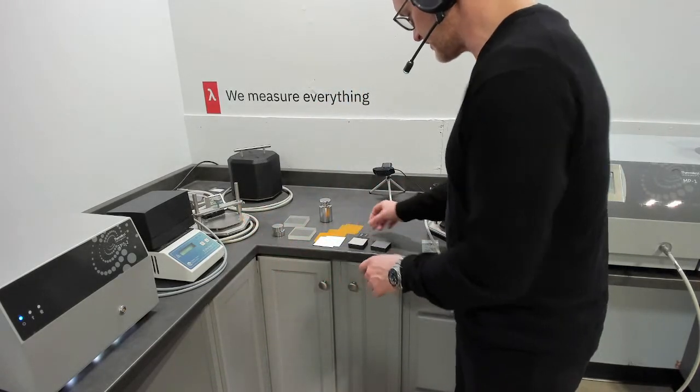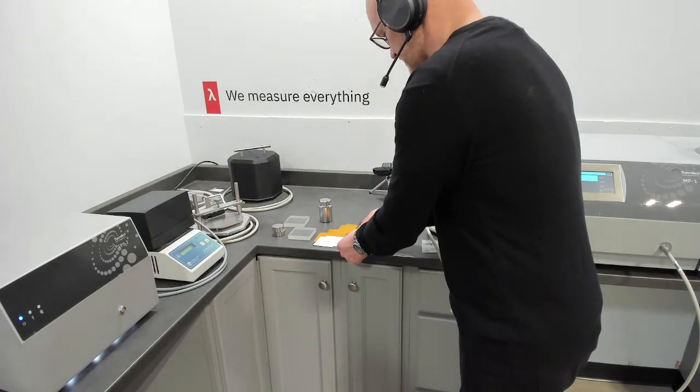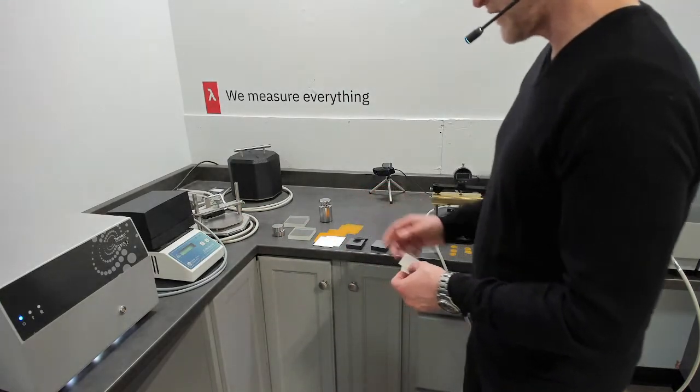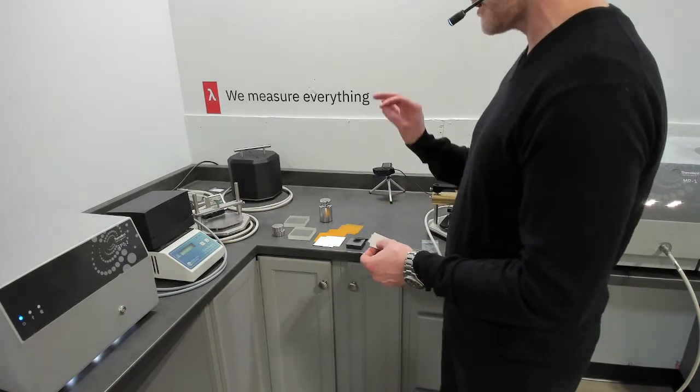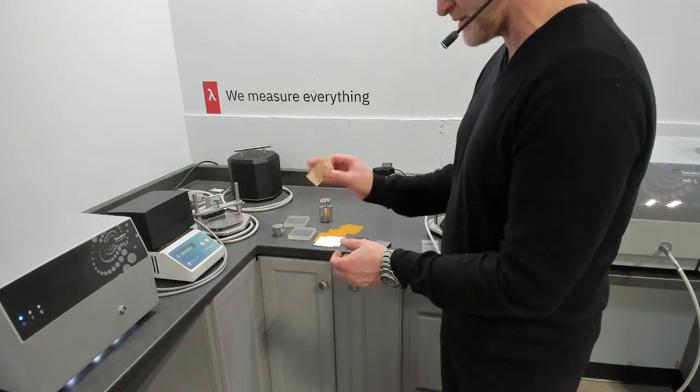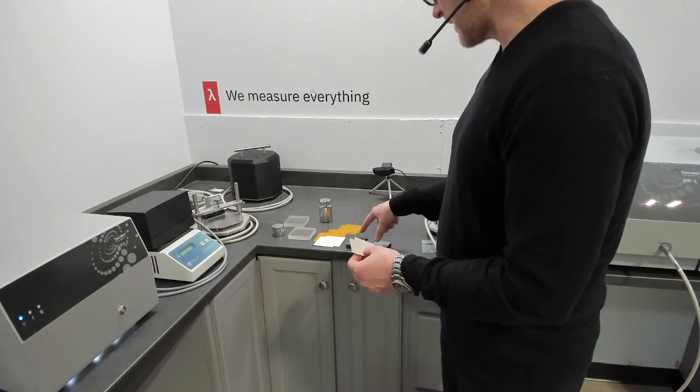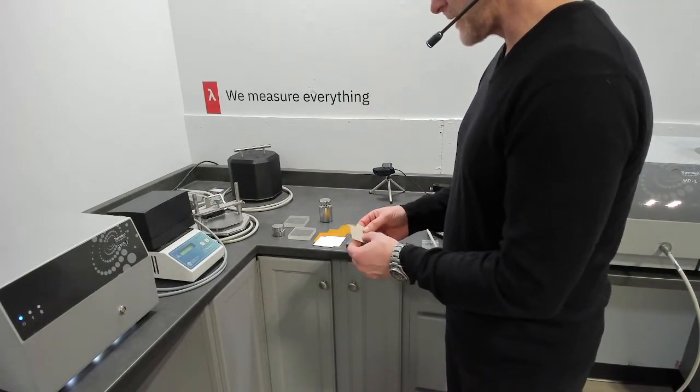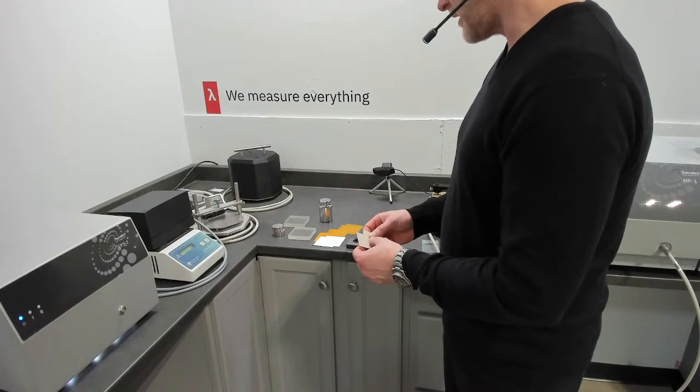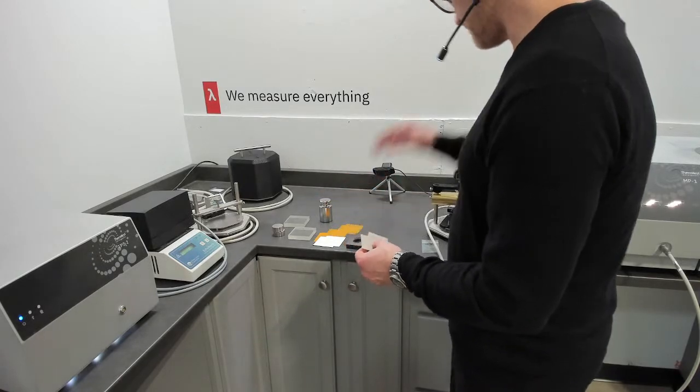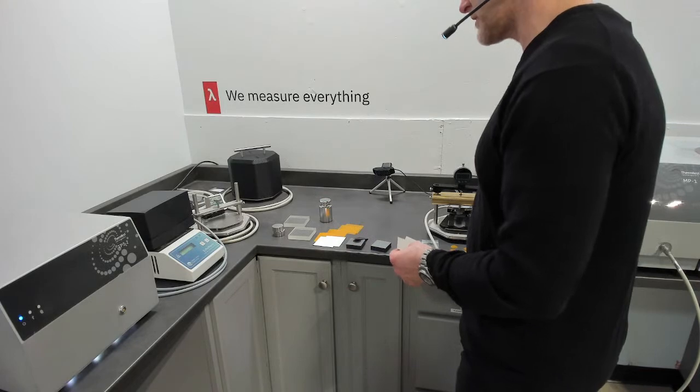So on the TPS2, the ability to measure slab would be limited to roughly around one watt per meter Kelvin as a conductivity range for measuring such materials. Thickness again, for the slab method, thickness range is sub millimeter. So maybe approaching 0.1 millimeter on the MP1, you can get down to 0.06 millimeter.